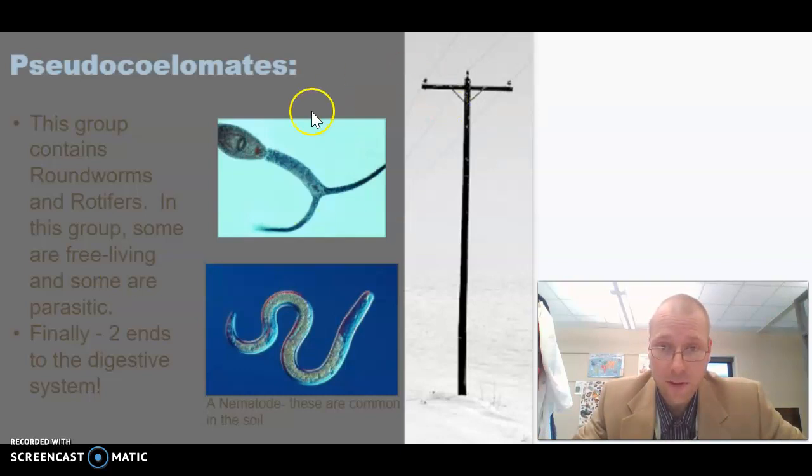So we have this cercaria, which I think this is from the group that can cause swimmer's itch. And then you have a nematode. Lots of these nematodes are found in the soil. Again, they are just tiny, tiny things. We call them worms, but they're not really worms.